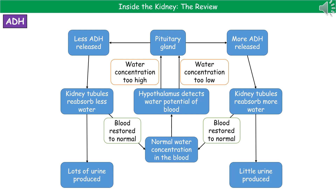Going the other way: if the hypothalamus detects that the water potential of the blood is too low, the pituitary gland is signalled to release more ADH. The ADH travels to the kidneys and causes the kidney tubules to reabsorb more water, which restores blood water to normal. We then produce a much smaller amount of urine, because the water is being reabsorbed into the blood, so there's less to pass into the urine and the volume is decreased.